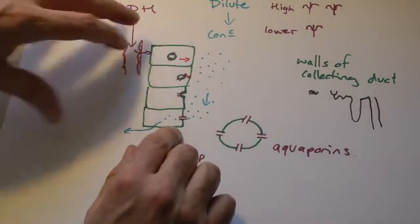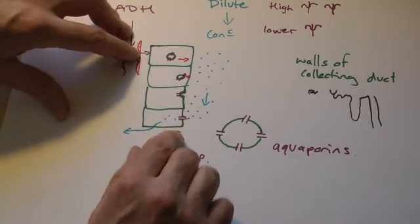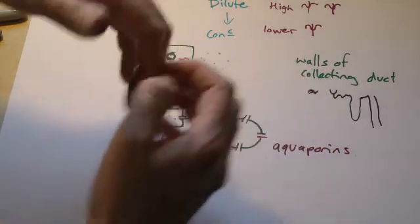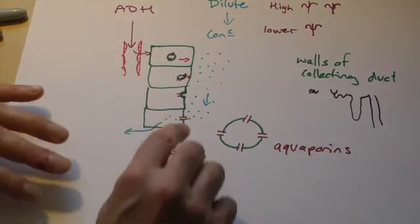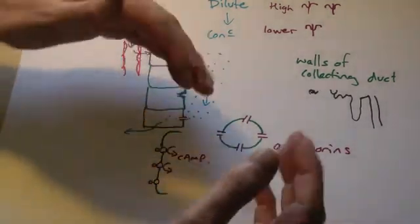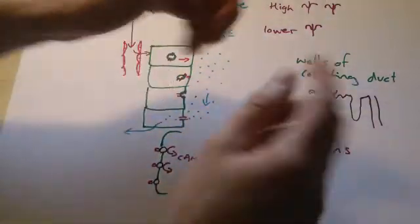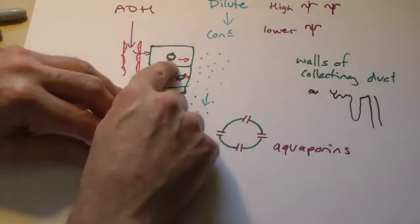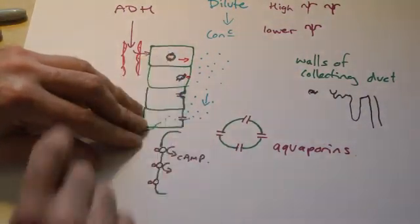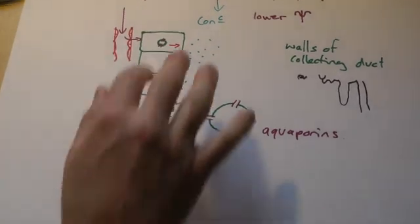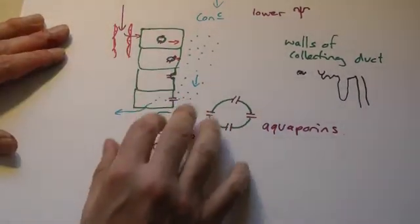What happens when we stop releasing or we're not releasing as much ADH? These membranes fold back again. A bit like endocytosis. You remember that, where we take things in. Same kind of idea. It's just a reverse process. So these little vesicles go back in here and wait for the next lot of ADH to come.